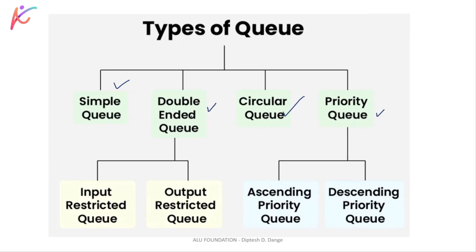जब हम double ended Queue पढ़ेंगे तब आपको concept समझ में आ जाएगा। अब priority Queue में दो types हैं: ascending priority Queue and descending priority Queue. Ascending मतलब क्या होता है — we are arranging the element from a smaller number to a larger number, तो सबसे smallest number को high priority होगी। Descending order में we are arranging the element from a large number to the small number, तो highest number को highest priority होगी।